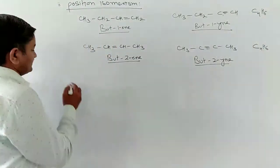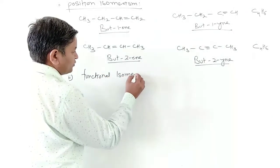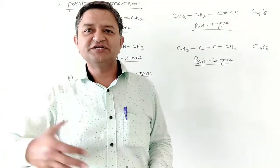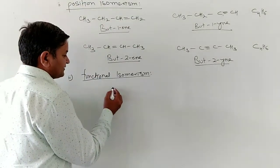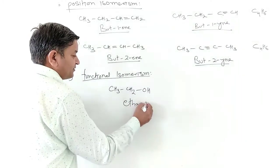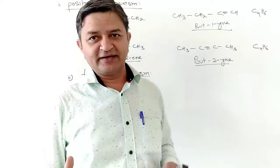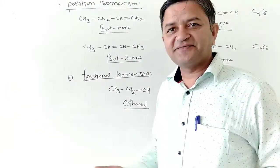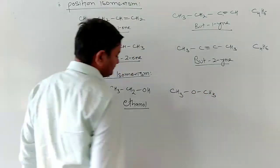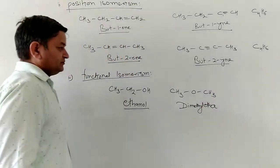The second and third type is called functional isomerism. What is functional isomerism? In this, the functional group changes its property. For example, if we have CH3-CH2-OH, this is called ethanol. This has the property of alcohol because an OH functional group is attached. Similarly, CH3-O-CH3 is called dimethyl ether.